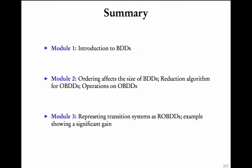We saw some rules to reduce BDDs in module 1 itself. In module 2, we saw that a change in the ordering affects the size of BDDs. These BDDs are called ordered BDDs if the order of occurrence of variables is preserved in every path. For instance, if there is a path in which you see x before y, then in every path, if at all you see both x and y, then x should come before y. We also saw that if we change the ordering, the size of the BDDs are possibly different.